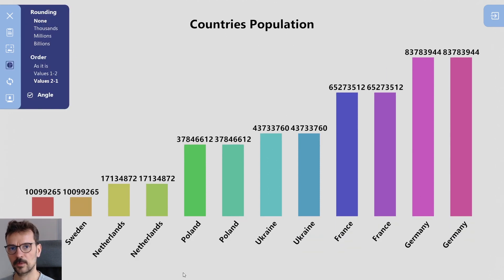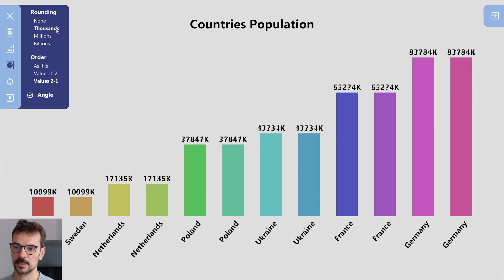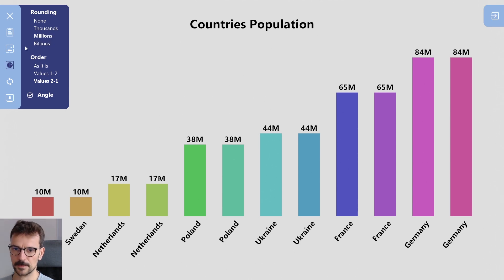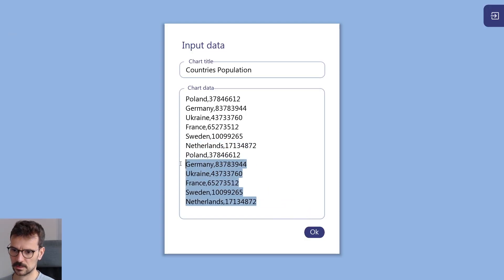So if you have more data, you can change the angle of the labels to still fit all the names. You can also change the numbers — you can change it to thousands, millions, or even billions. In the case of European countries, millions are the best. But let's go back and leave only those six.